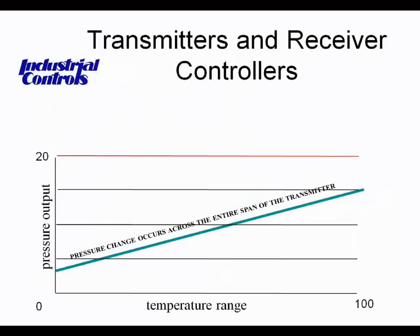This graph shows the linear relationship between pressure change, on the vertical axis, and the horizontal axis, which represents whatever units are being measured. In this case, that span of temperature is up to 100 degrees.